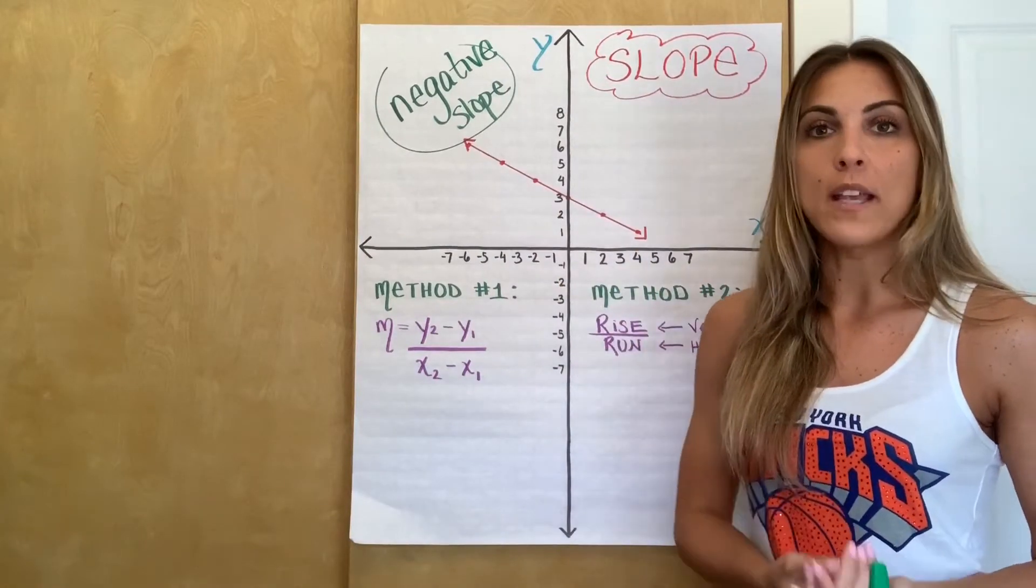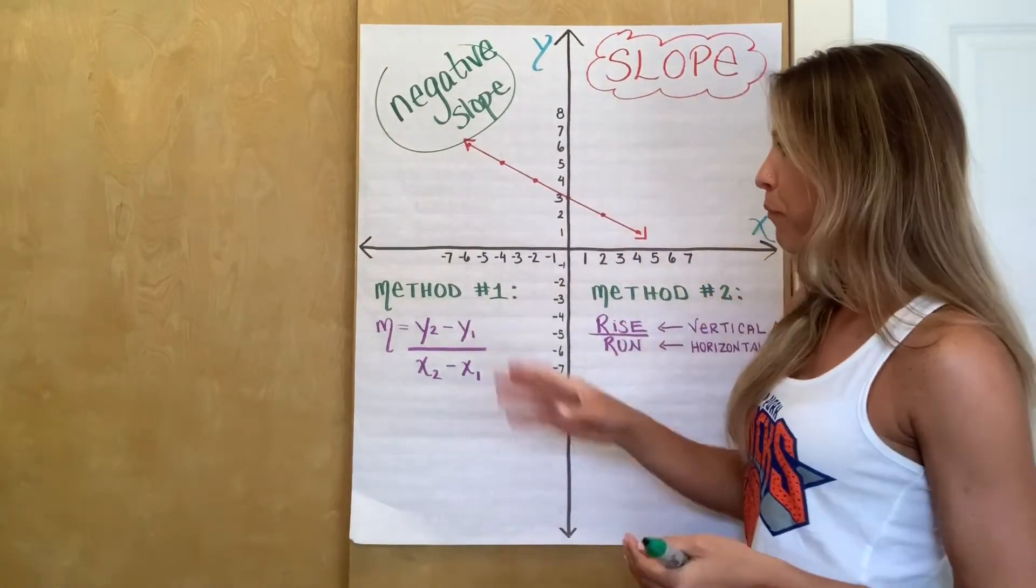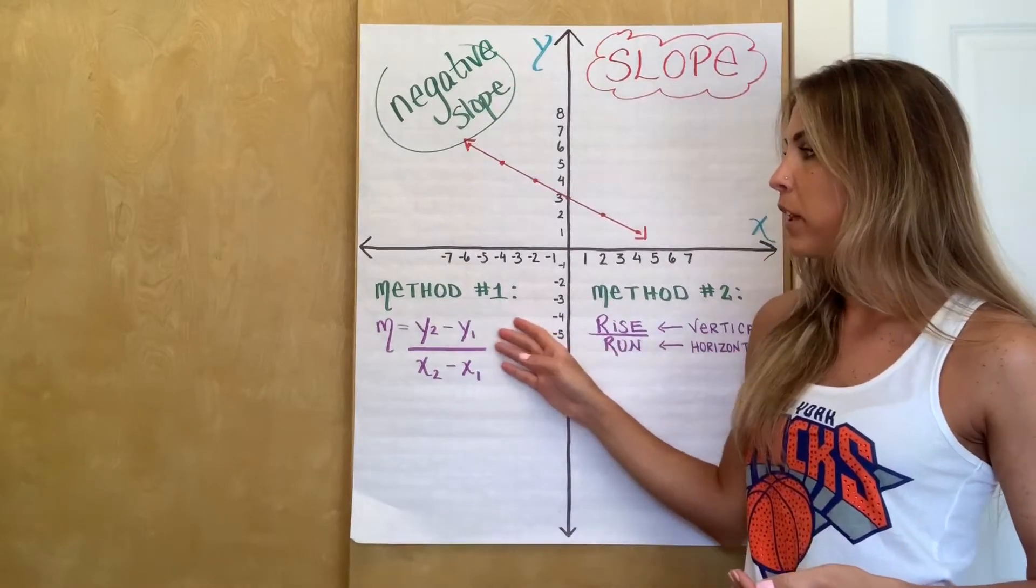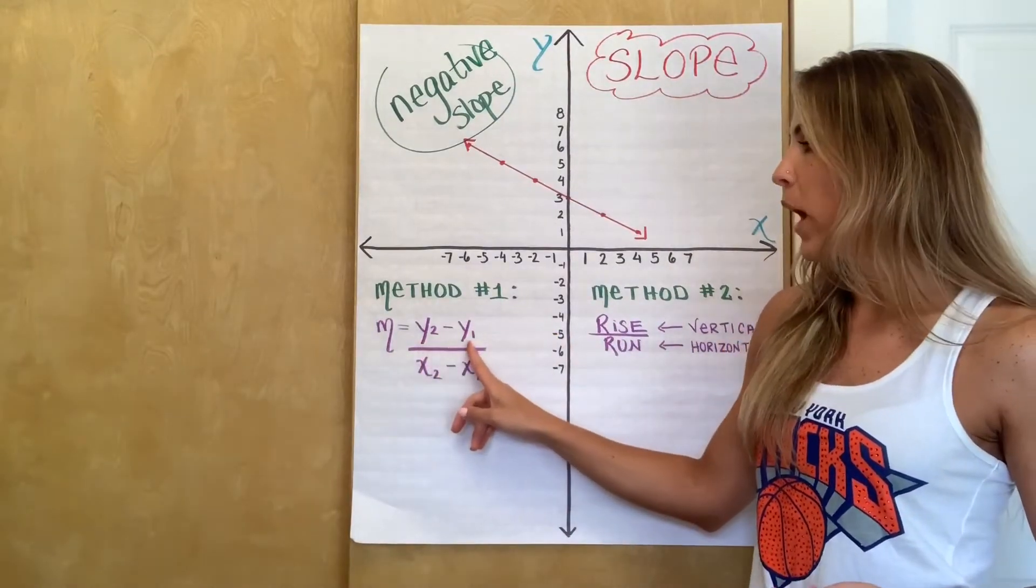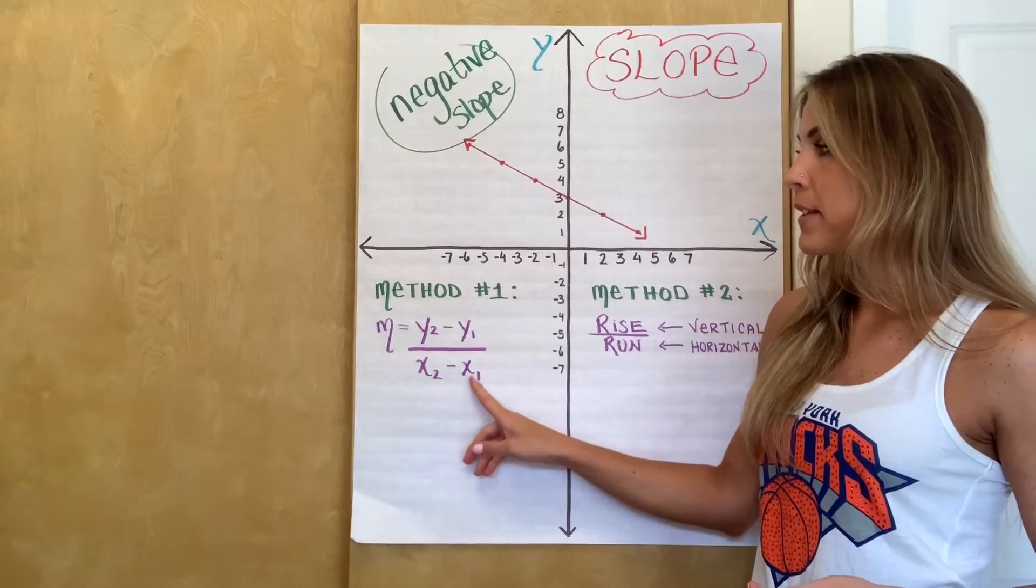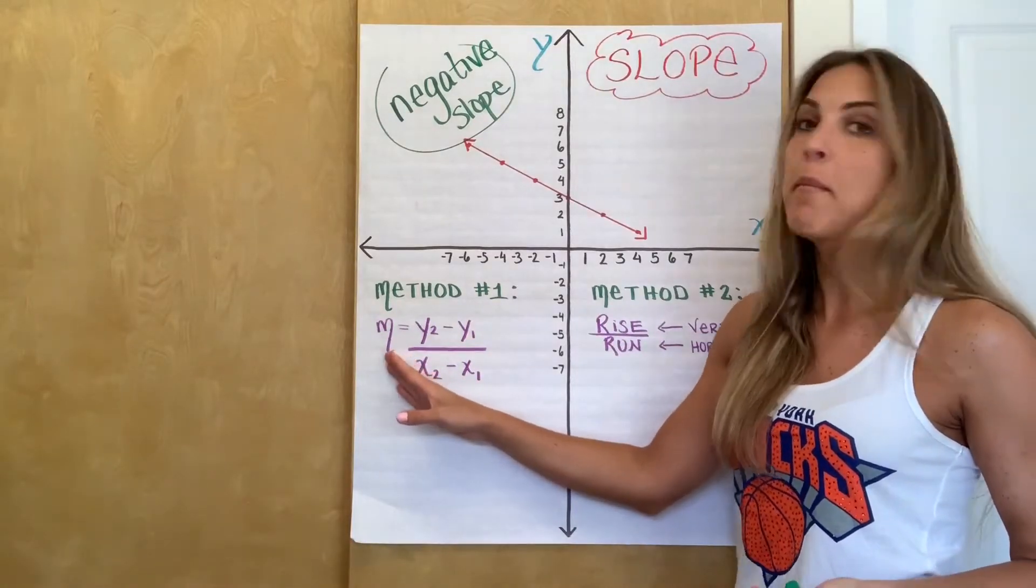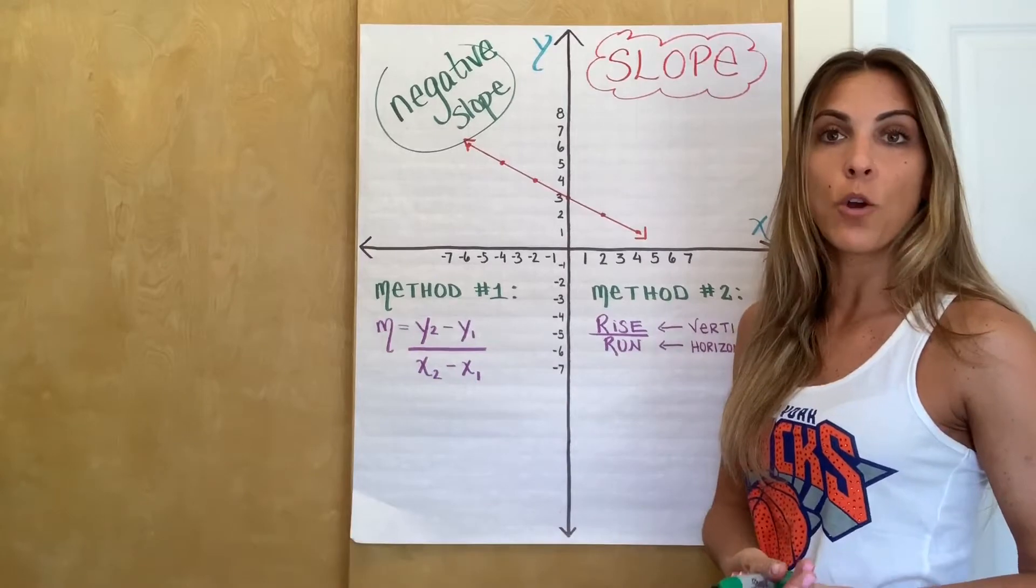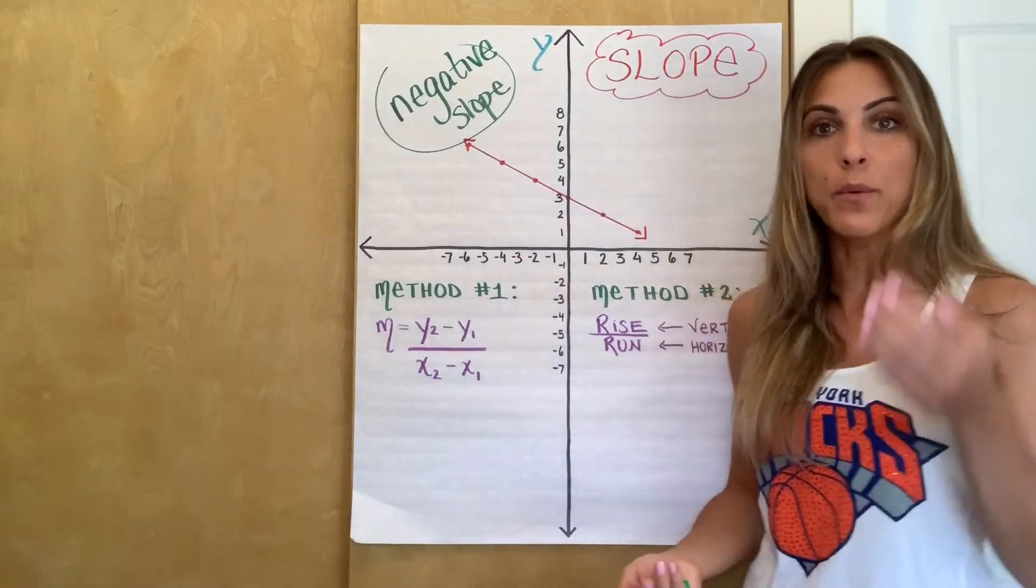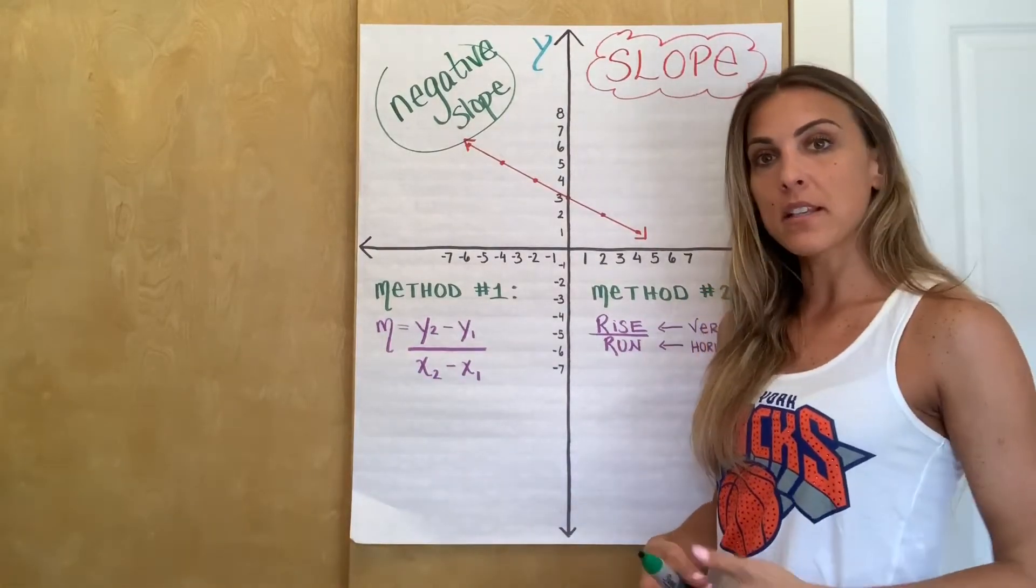All right, so there are two different ways that I'm going to show you how to calculate the slope. Method number one is by using the formula y2 minus y1 over x2 minus x1 equals m. So m is the variable that represents slope in the slope intercept form of an equation. So in y equals mx plus b, m is the slope.